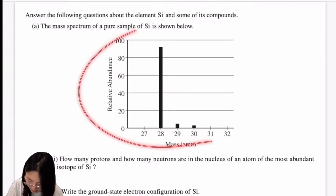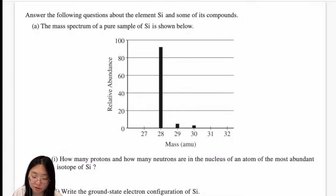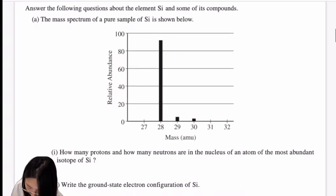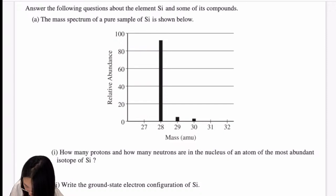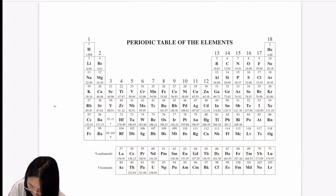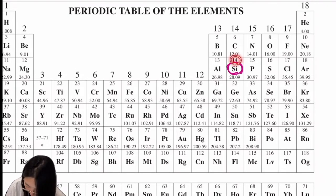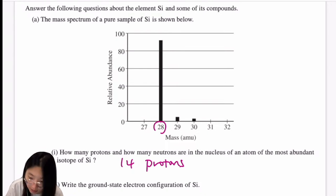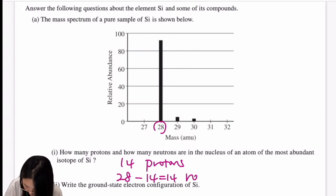From the mass spectrum of silicon, the most abundant isotope has a mass of 28. Silicon has atomic number 14, so it has 14 protons. The number of neutrons = 28 − 14 = 14 neutrons. So the most abundant isotope has 14 protons and 14 neutrons.